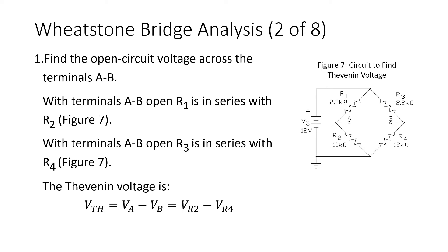Step 1 is to find the open-circuit voltage across terminals A and B. With terminals A and B opened, we see R1 and R2 in series — whatever current flows through R1 can only flow through R2. Similarly, R3 is in series with R4. The Thevenin voltage is the voltage from A to B. Looking from terminal A to terminal B, we find a voltage drop across R2 (positive to negative) and a voltage drop across R4 (negative to positive). So VTH equals V_R2 minus V_R4.